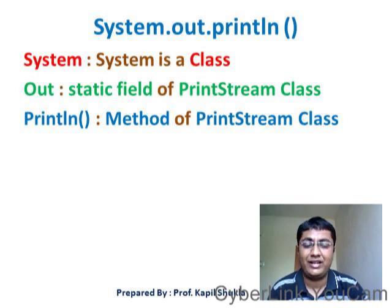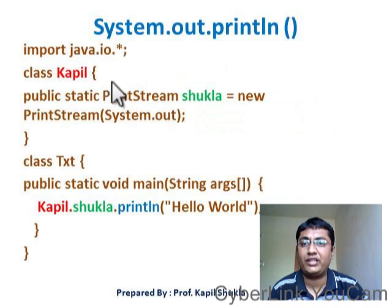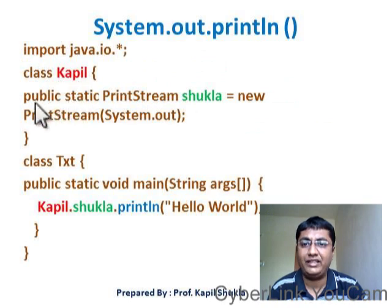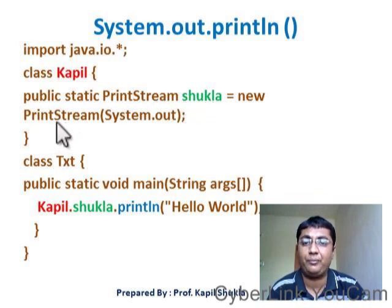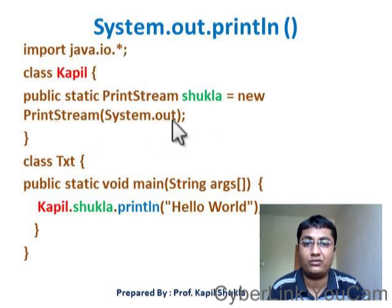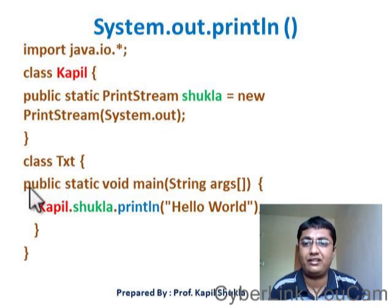Let's try to understand it. For that, we have created one code. In this code, you can see that a class called Copy is created, and in that class a public static field is created. That field is actually an object of the PrintStream class, and that object is created with a parameterized constructor that takes the argument System.out.